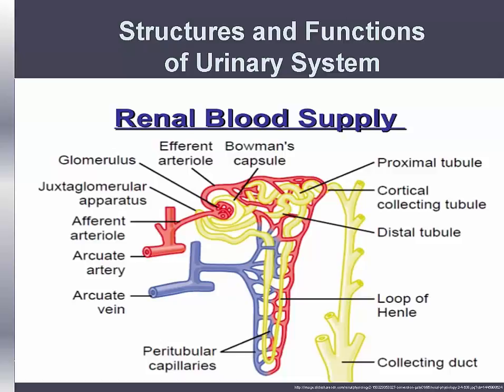The glomerulus, Bowman's capsule, proximal tubule, and distal tubule are located in the cortex of the kidney. The loop of Henle and the collecting tubules are located in the medulla. Several collecting tubules join to form a single collecting duct. The collecting ducts eventually merge into a pyramid that empties via the papilla into a minor calyx.